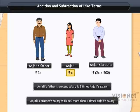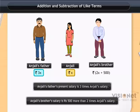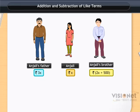Then, as Anjali's father's present salary is 3 times Anjali's salary, his salary becomes 3 into x, or 3x. Also, as Anjali's brother's salary is Rs. 500 more than 2 times Anjali's salary, his salary becomes 2x plus 500. Now we need to find the total salary.